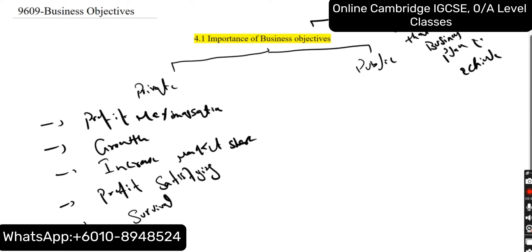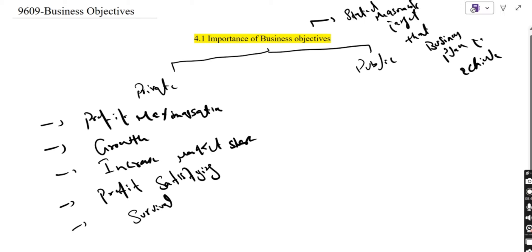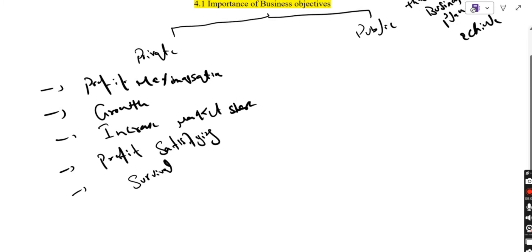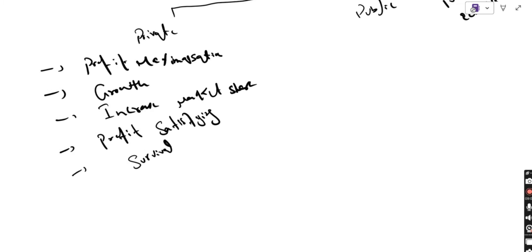Any business operating in the private sector follows this sequence: first you want to survive, then go for profit maximization, then growth, and then increasing market share. There are a lot of objectives for any business, including growth and increasing market share. One more thing we can add is CSR.